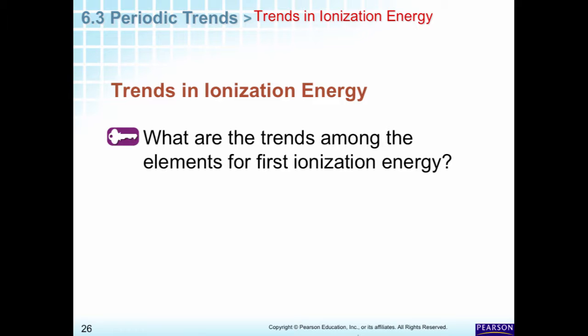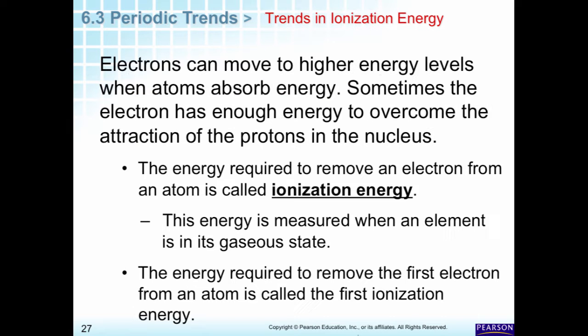Let's look at ionization energy. Ionization energy is the energy needed to remove the first or any electron from an atom. We've already learned that electrons can move to higher energy levels; when they get enough energy to actually leave the atom entirely, that energy is called ionization energy. We measure these things only in the gaseous state, but it still gives us very useful general ideas. Usually we talk about the first ionization energy — the energy needed to remove the first electron. If it's very low, it's very easy to lose that first electron. The second electron is always going to be harder to remove than the first.